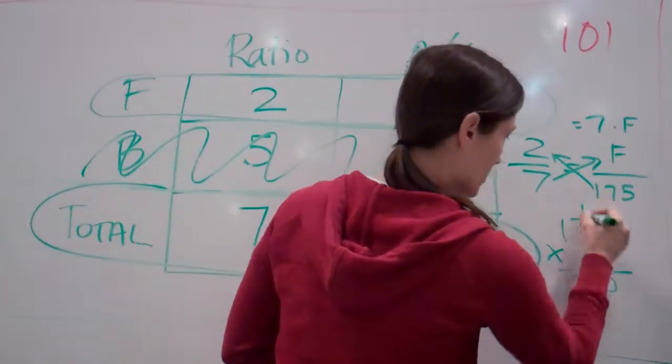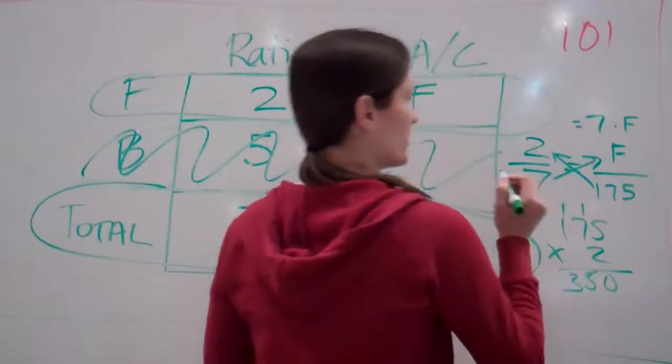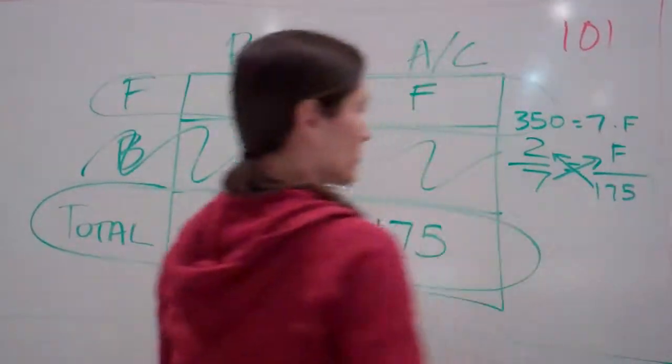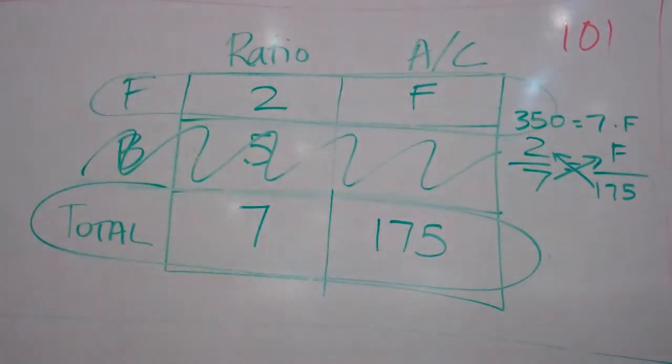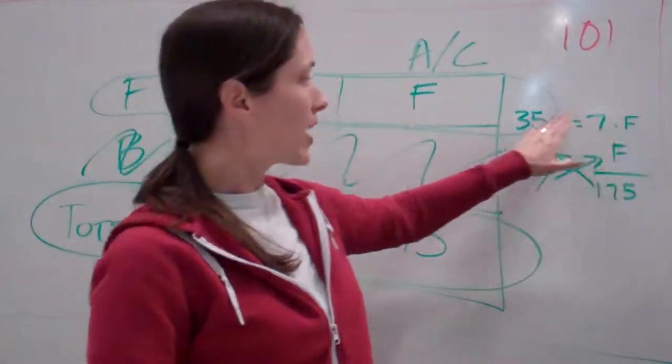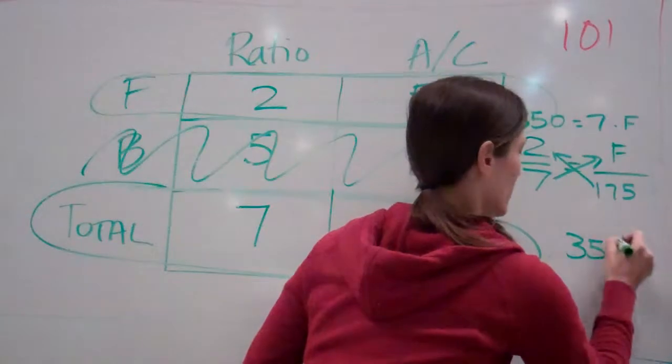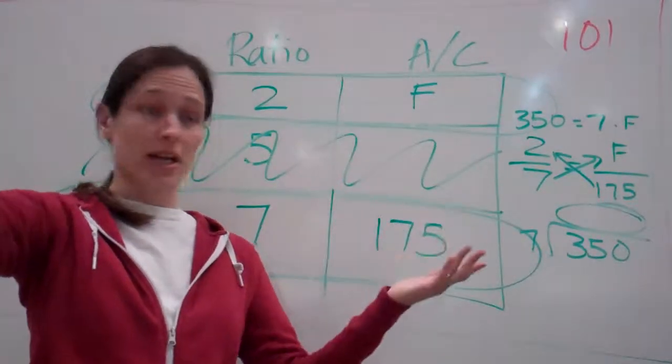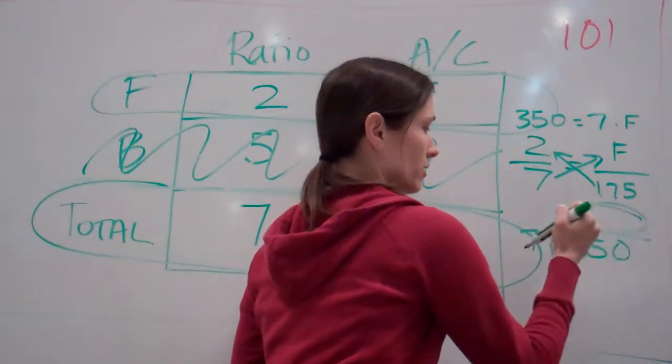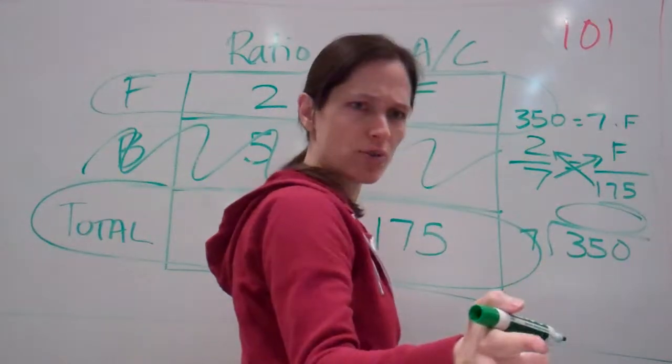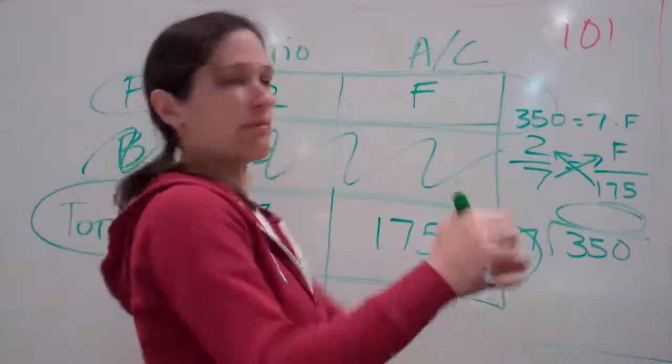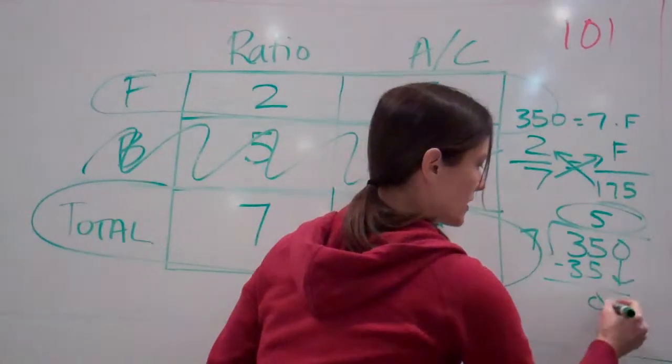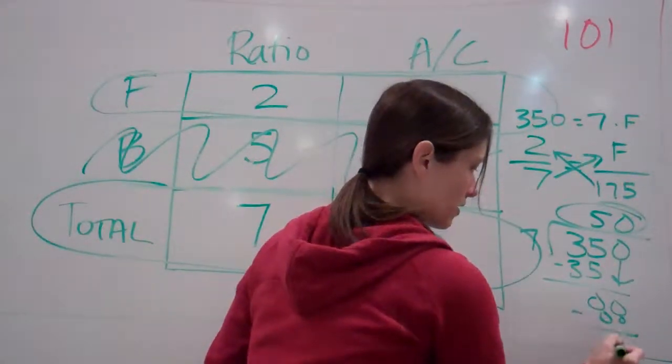I'm going to work that problem. 175 times 2 is 350. So now this is seven times what equals 350? So 350 divided by seven, because seven times what equals 350? And the answer we know. What would we put here? 50. So we're going to put a five here because seven times five is 35. Give it a zero. Bring down the zero. Seven will go into zero zero times. Got it? So how many football players were there? 50.